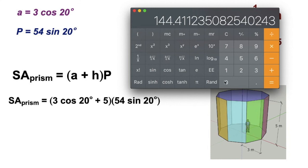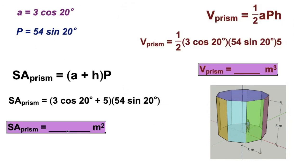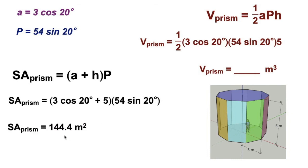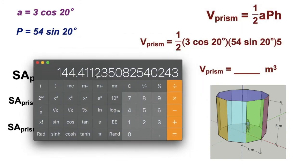144 and four tenths. If we're going to the nearest tenth, 144.4. Let's put that down, 144.4 square meters. And over here, we'll work out the volume. We're going to work out one half apothem times perimeter times the height. We've got apothem, perimeter, and height.